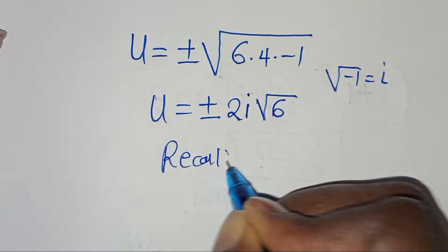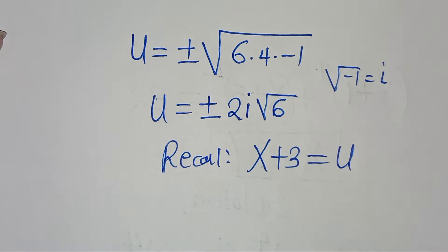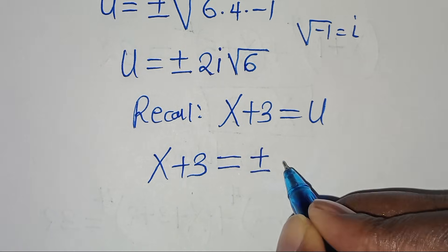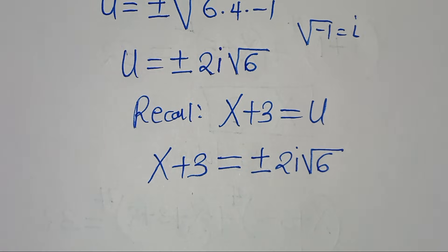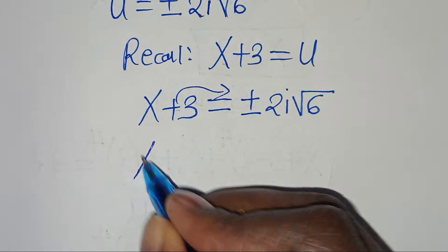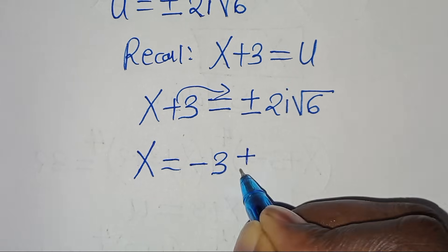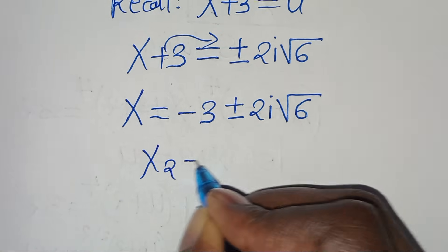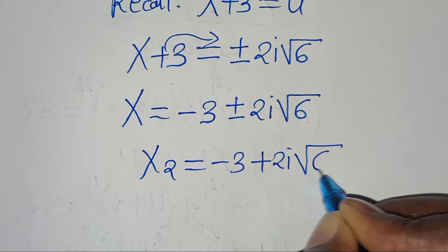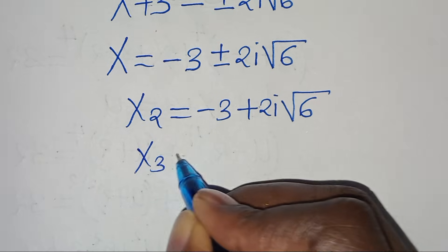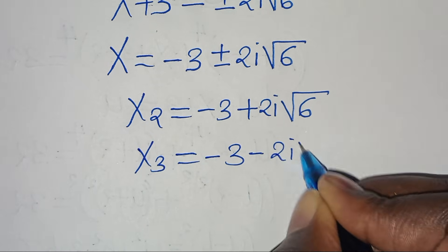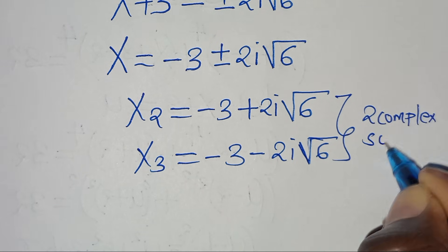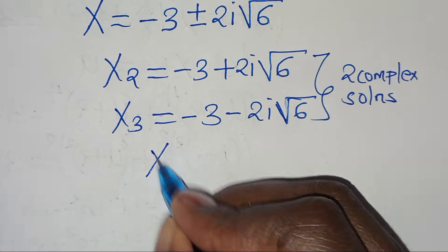Recalling that x + 3 equals u, we have x + 3 equals plus or minus 2i√6. Taking minus 3 to the right side, x equals minus 3 plus or minus 2i√6. So x₂ equals minus 3 plus 2i√6, and x₃ equals minus 3 minus 2i√6. These are two complex solutions.